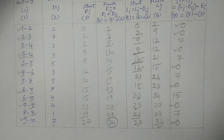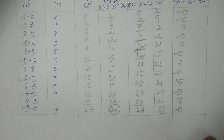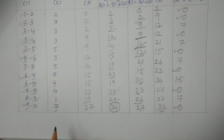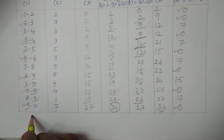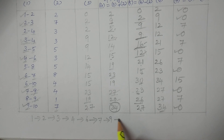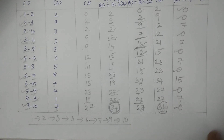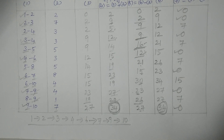If you observe the zeros in the total float column, the corresponding activities are critical activities. From the observed critical activities in this table, we get the critical path: 1→2→3→4→6→7→9→10. The total minimum project duration is 34 days.